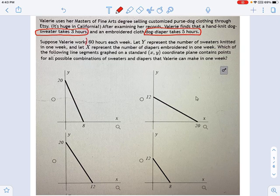If she works 60 hours a week, I want to know which one of these graphs represents the number of sweaters and diapers made in one week. The way you do this is you say, okay, what would happen if she spent all her time making sweaters and no diapers?